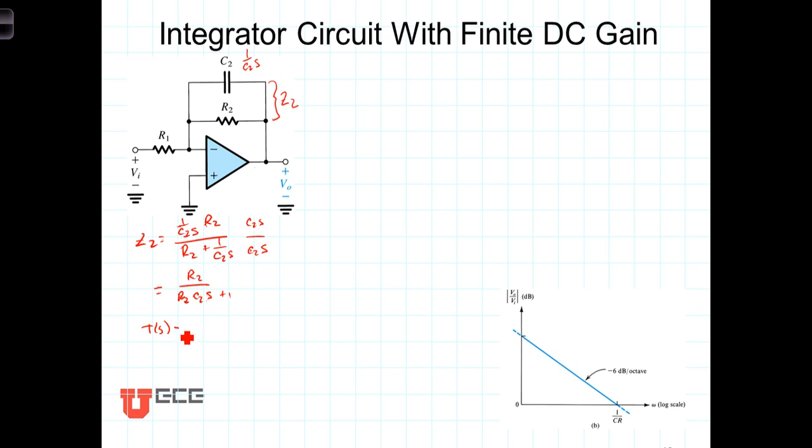Now once again, the transfer function T(S) is equal to negative Z2 over Z1. Z1 is just R1. Now we can clean this up. When we do so, we will get then this R1 in the denominator, so we can invert and multiply it, and we end up with T(S) is equal to negative R2 over R1 times 1 over 1 plus R2 C2 S.